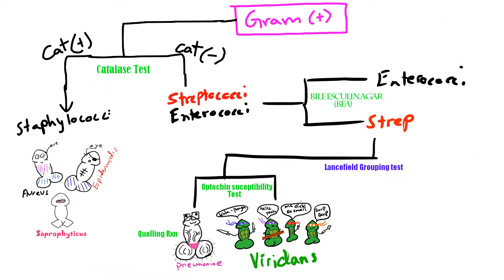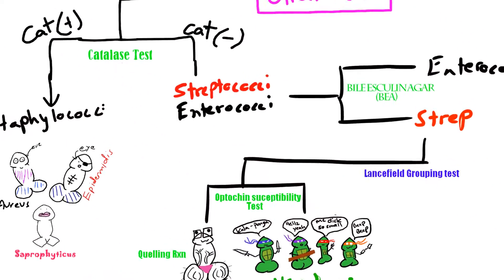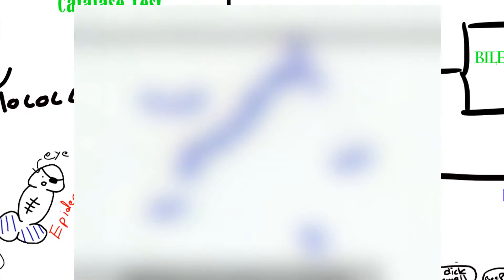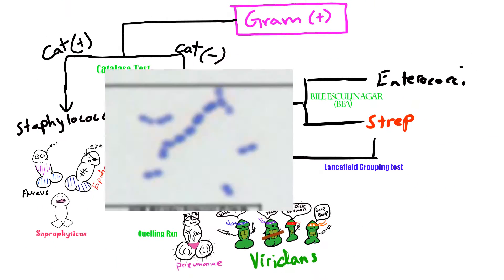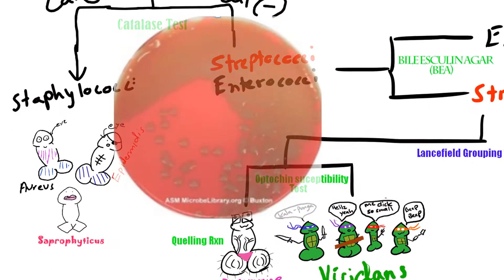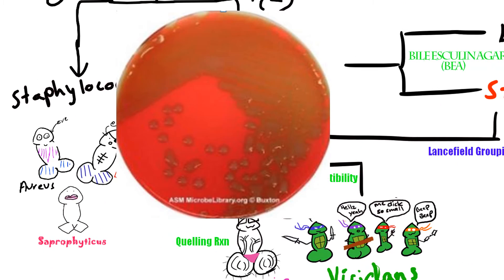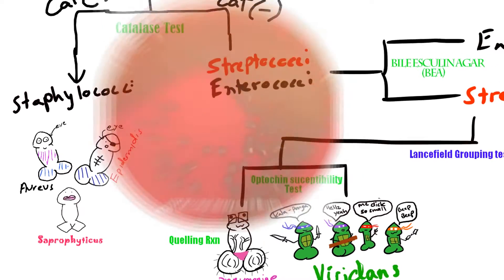Under the microscope after staining, it looks like a chain of lancet-shaped diplococci — basically a bunch of balls attached in a line. They can be longer but usually don't get too long. It is also alpha hemolytic, meaning it oxidizes the heme groups in blood, making the agar look green, as you can see in the picture.